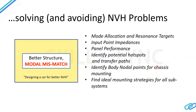We look for an optimum mode allocation and resonance targets. Input point impedances should be higher — we use rubber bushes so that the transmissibility of forces is low. We also need better panel performance. Flat, large panels boom at very low frequencies, but very stiff and light panels radiate a lot of noise at higher frequencies. There are many things we need to intelligently design in order to achieve good NVH quality.